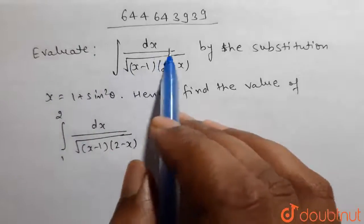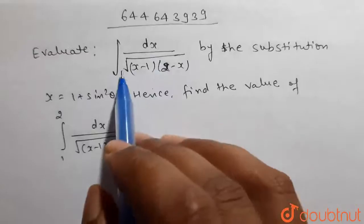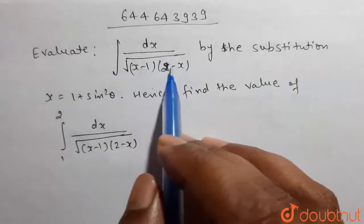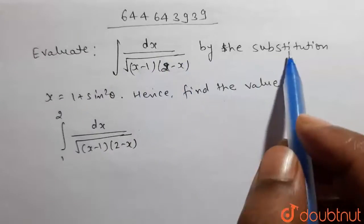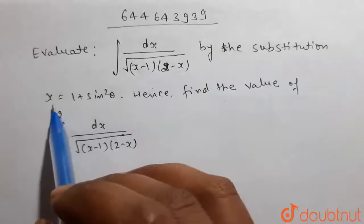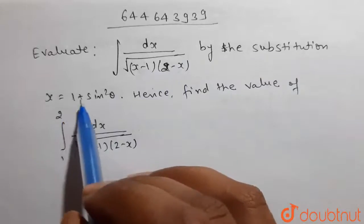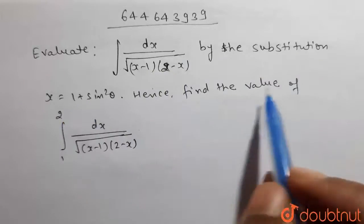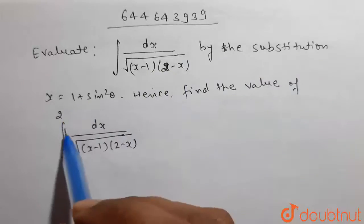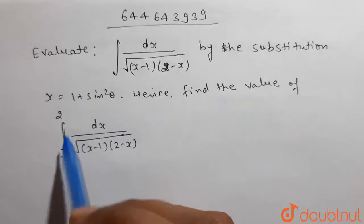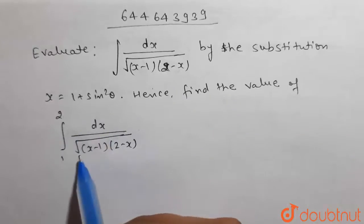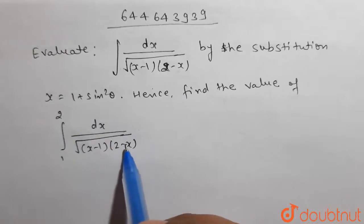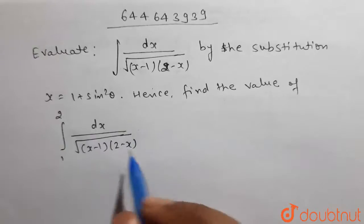Evaluate the integration of dx divided by under root of (x minus 1) into (2 minus x), by the substitution x equals to 1 plus sin square theta. Hence, find the value of the integration from 1 to 2 of dx divided by under root of (x minus 1) into (2 minus x).